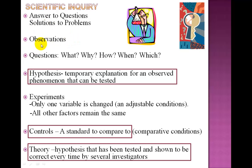Next, we formulate questions such as what has happened, why did it happen and how did it happen. When we come up with possible explanations, we call those as hypothesis. A hypothesis is a temporary explanation for an observed phenomenon that can be tested.